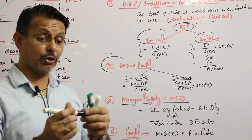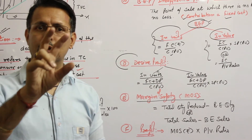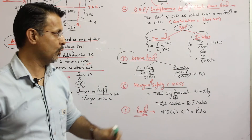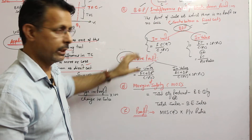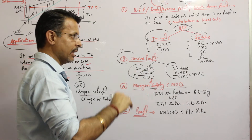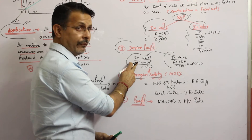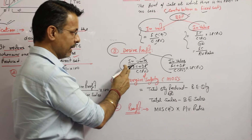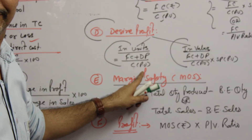Marginal costing is normally a decision-making tool covering two things: production planning and profit planning. For desired profit — that is, profit planning — the formula for the number of units required is: fixed cost plus desired profit, divided by contribution per unit.